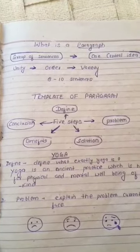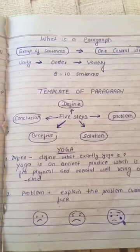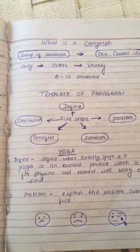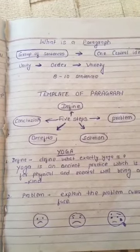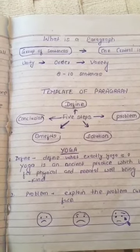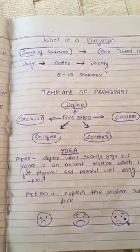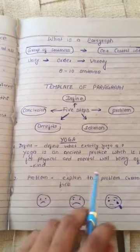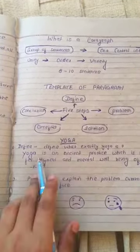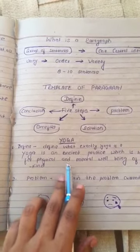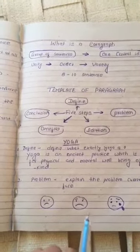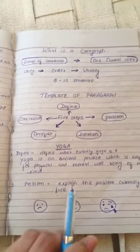Let's get started on how to write a paragraph on the topic of yoga. The first point from our template is 'Define.' So what is the first step? Define — define what yoga is. Here you have to specify what yoga is all about. You can write it this way: 'Yoga is an ancient practice which is helpful for physical and mental well-being of mankind.' Here we have provided the definition of yoga.